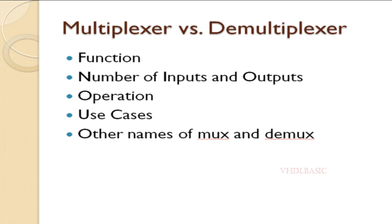In the case of a demultiplexer, it takes a single input and routes it to one of several possible outputs based on a control input. It splits one input line into multiple output lines. DEMUXes are used to distribute a single data stream or signal to multiple destinations or receivers.